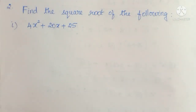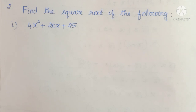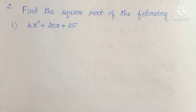Hello students. Now in square root, Exercise 3.7, 2nd Roman, we are going to see. See the first question: find the square root of the following — 4x squared plus 20x plus 25. So here we have a trinomial term, so we can think about either the formula method or the factorization method.